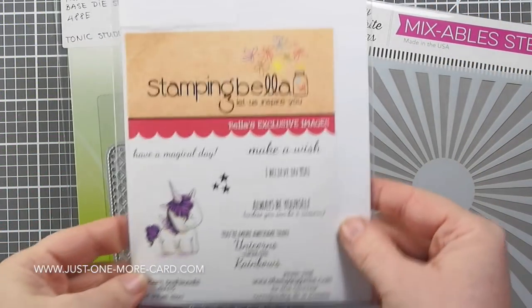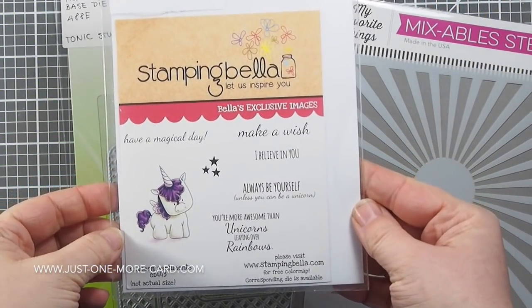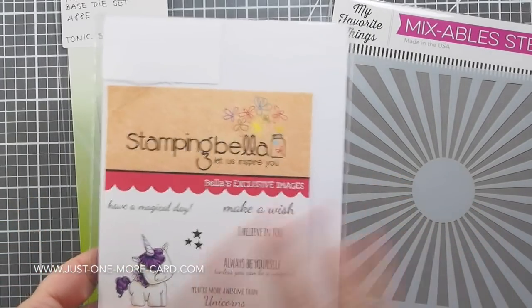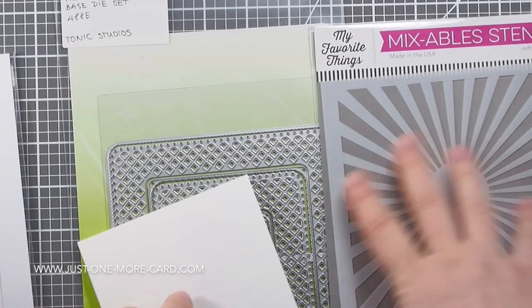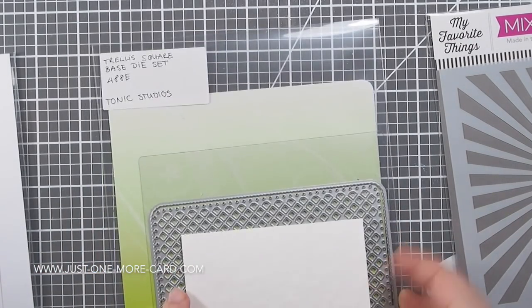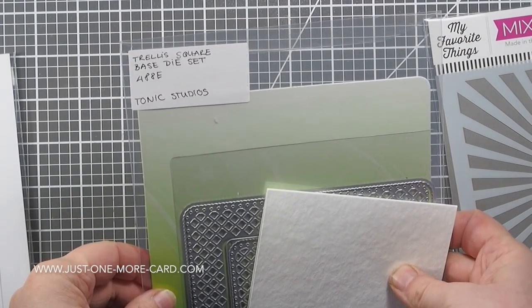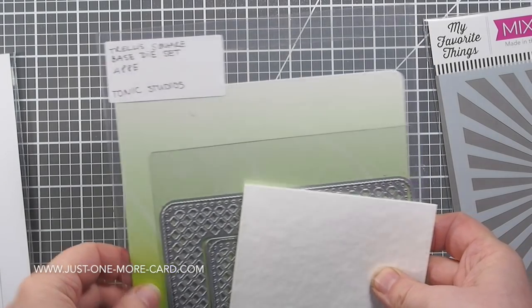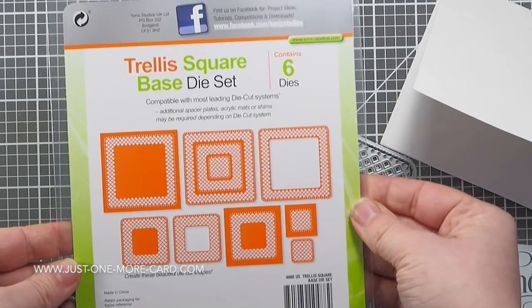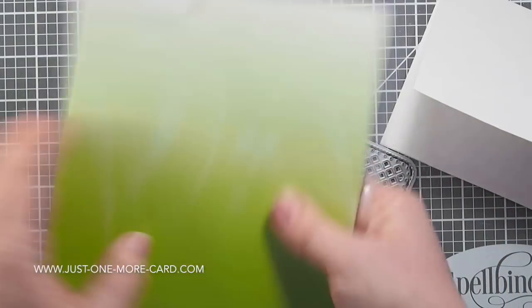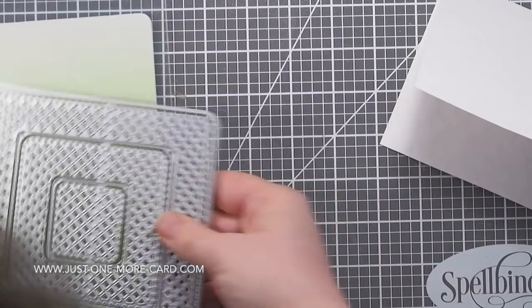Here are the supplies I'm going to be using. This is the adorable unicorn from Stamping Bella. I absolutely love the stamps and sentiments. I'll be using that stencil by My Favorite Things and these dies by Tonic Studios. This is the Trellis Square Base Die Set and it will be listed like all the supplies in the video description below.